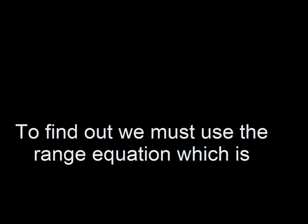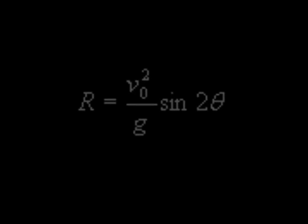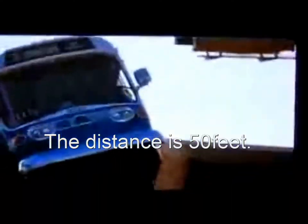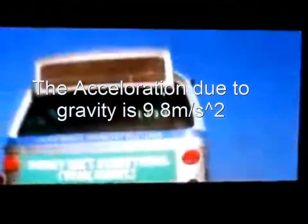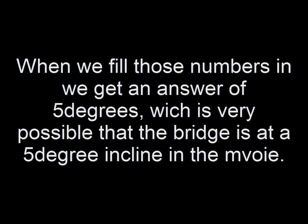To find out, we must use the range equation. The range equation is used to find the angle of an incline. The speed is 68 miles per hour, the distance is 50 feet, and the acceleration due to gravity is 9.8 meters per second squared. When we fill those numbers in, we get an answer of 5 degrees, which is very possible that the bridge is at a 5-degree incline in the movie.